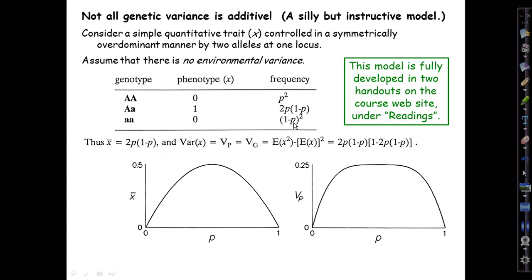We assume Hardy-Weinberg frequencies, so we know the frequencies of the three genotypes. It follows then that X-bar, the mean trait value, is just the frequency of the heterozygotes who contribute one; everybody else contributes zero. Here's the expression for the variance of X, which must be the total genetic variance because there is no environmental variance.